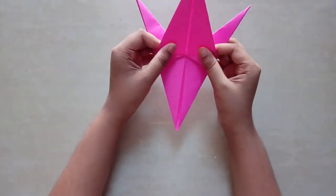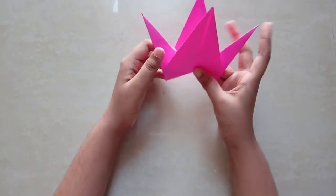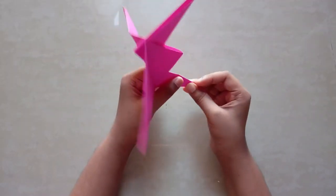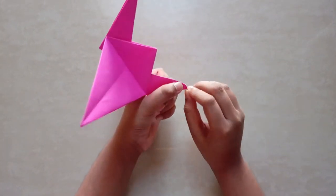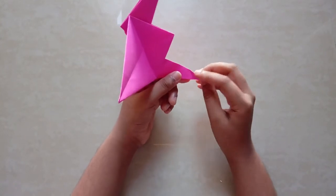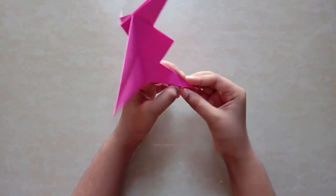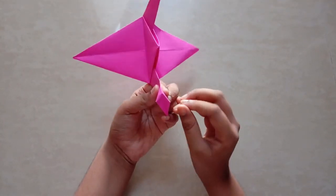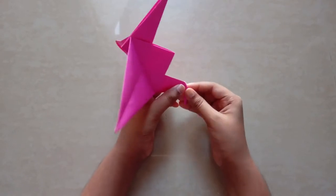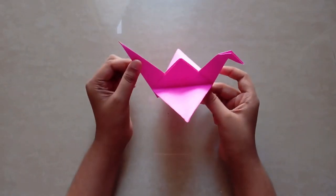Now you're gonna take this flaps, put them like this. One last step is the head. You're gonna fold the head like this. Now open that and push the head down like this, and then press it like this. So here we have origami crane.